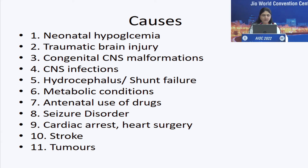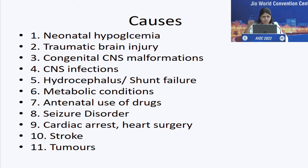When you take history, you should be aware of neonatal hypoglycemia, traumatic brain injury, congenital malformations of the CNS, infections of the CNS, hydrocephalus, shunt surgery, shunt failure, metabolic conditions, use of drugs in the mother antenatally — especially narcotics — seizure disorder, any cardiac condition, congenital cardiac anomaly, surgery for that, cardiac arrest, or any other vascular event in the prenatal or antenatal period, stroke, and CNS tumors. The list goes on; I am only highlighting the common ones.